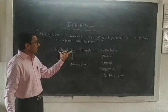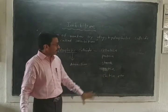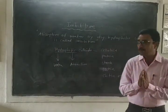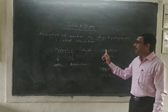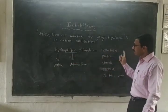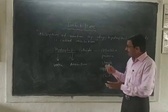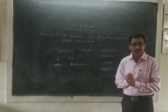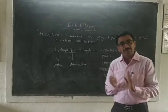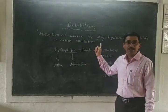These hydrophilic colloids — cellulose, protein, starch, pectin, and chitin — are present in the seeds. Because of the presence of these hydrophilic colloids, the seeds absorb the water and the seeds become swollen. The absorption of water by dry hydrophilic colloids is called imbibation.